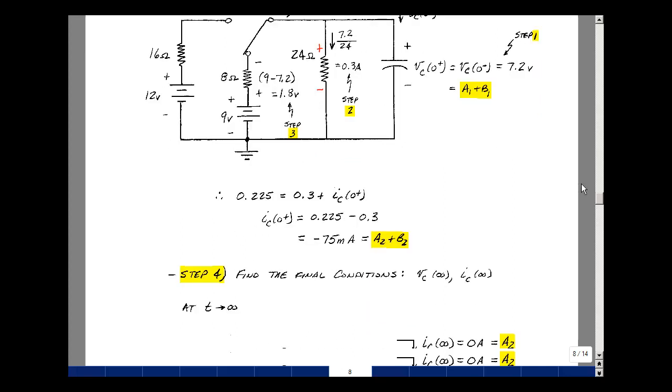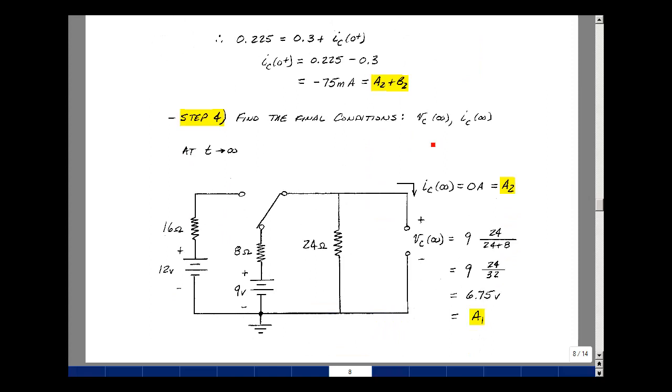Step four of my algorithm is to find the final conditions. That would be my capacitor voltage and my capacitor current as t approaches infinity. The switch is closed to this position at t equals 0 plus, so we're still in that position. The capacitor is in a DC circuit for a long time. It looks like an open circuit. The current in the capacitor is going to be 0. That's going to be equal to a2 plus b2 times e to the minus infinity, which is equal to a2. Now the capacitor voltage is the voltage across the 24 ohm resistor. I've got a voltage divider again. The current in the 8 ohm and the 24 ohm is the same. My voltage across here is going to be 24 divided by 24 plus 8 times the voltage of 9 volts. That turns out to be 6.75. That's going to be equal to a1 plus b1 times e to the minus infinity, or just a1.